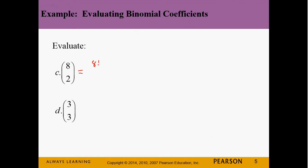For C(8,2): 8! / (2! × 6!) = (8 × 7 × 6!) / (2 × 1 × 6!). The 6! cancels, then 2 goes into 8 four times, giving 4 × 7 = 28.